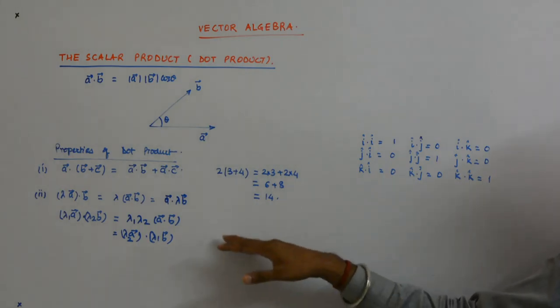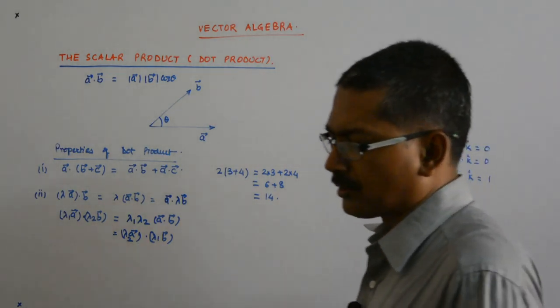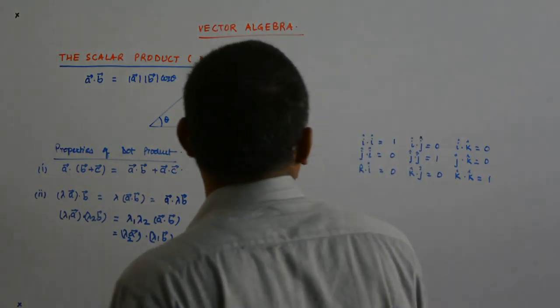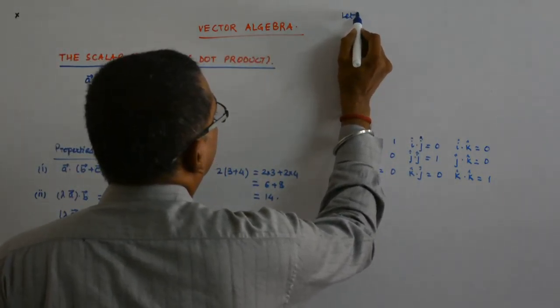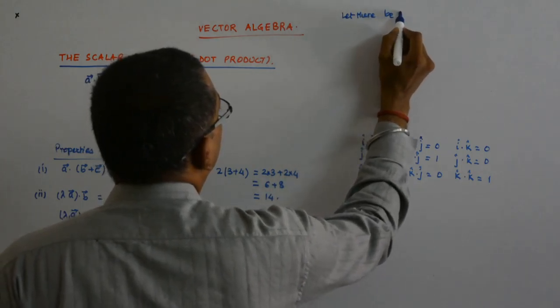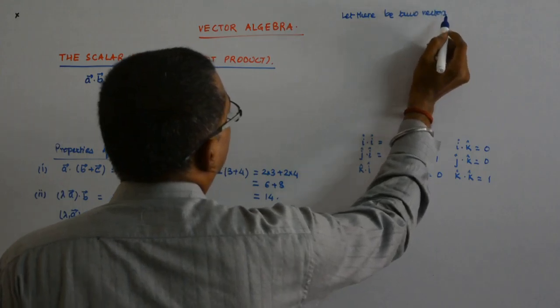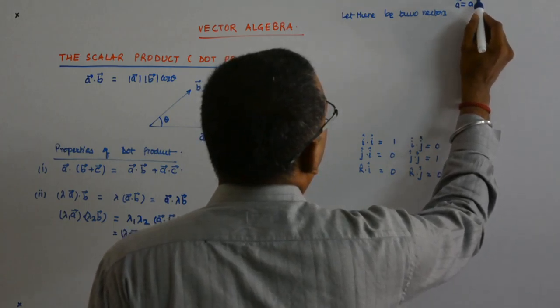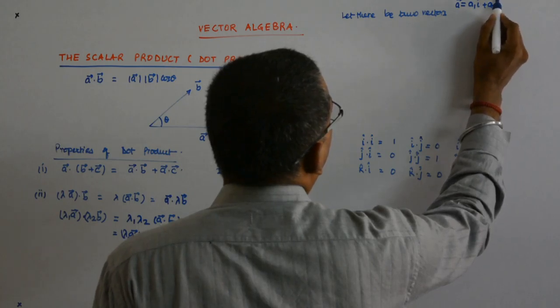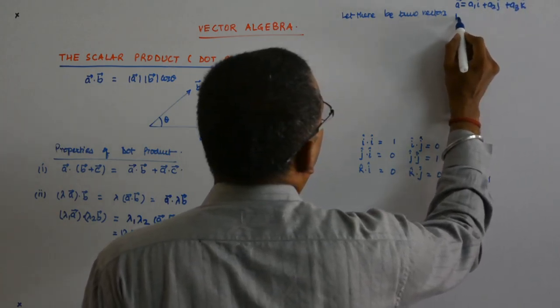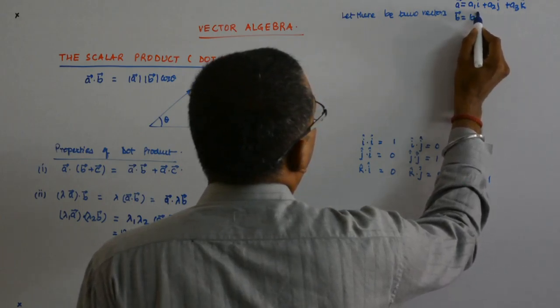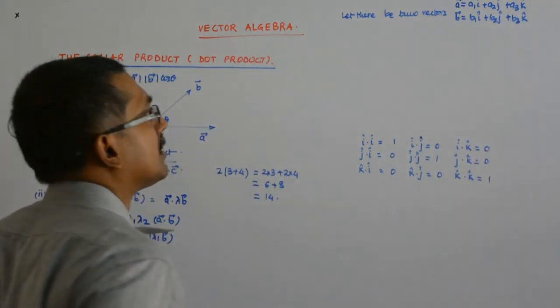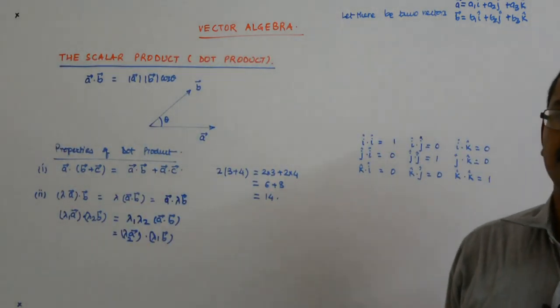Now these two are very important theorems, which will help us in finding out what in real life the dot products are. So, if we are given two vectors, let there be two vectors, a is equal to a1 i cap plus a2 j cap plus a3 k cap. And b is equal to b1 i cap plus b2 j cap plus b3 k cap.